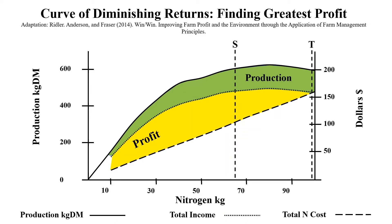Point S: Ridler states that many input-output models average total income and costs, creating point S which coincides here at 65 kg of nitrogen. This is where those with vested interest want to be. Point S produces more grass than point T and may make more money, but definitely not for farmers.